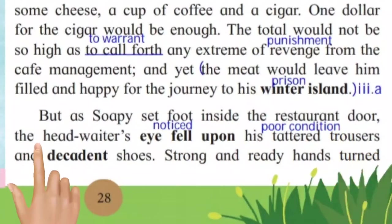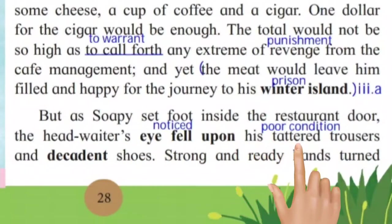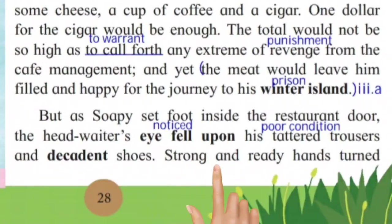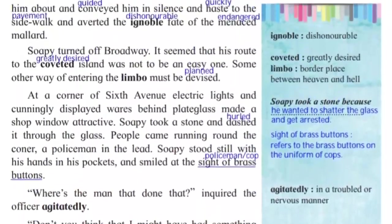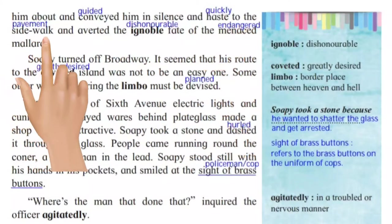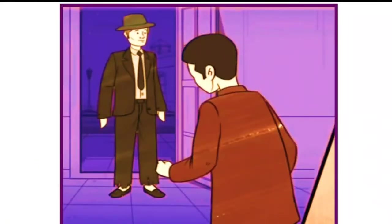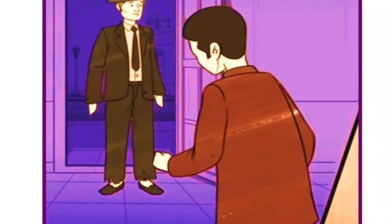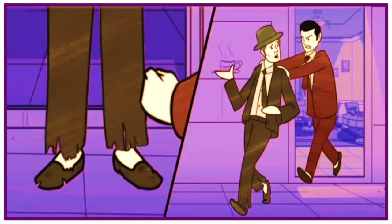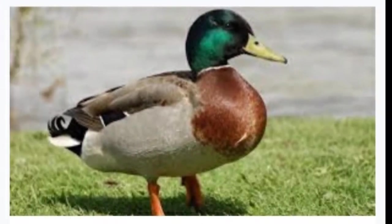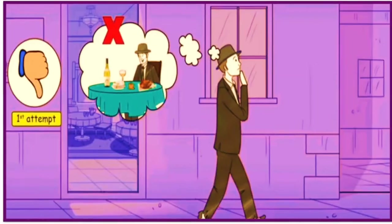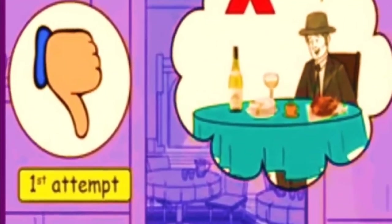But as Soapy set foot inside the restaurant door, the head waiter's eye fell upon his tattered trousers and decadent shoes. Strong and ready hands turned him about and conveyed him in silence and haste to the sidewalk, and aborted the ignoble fate of the menaced mallard. Lekin jaise hi Soapy restaurant mein qadam rakhta hai, ek head waiter ki nazar uske phate-purane trouser aur kharaab jooton par padti hai. Head waiter use khaamoshi se bahar nikaal deta hai. Soapy ka jail jaane ka ye pehla plan fail ho jaata hai.